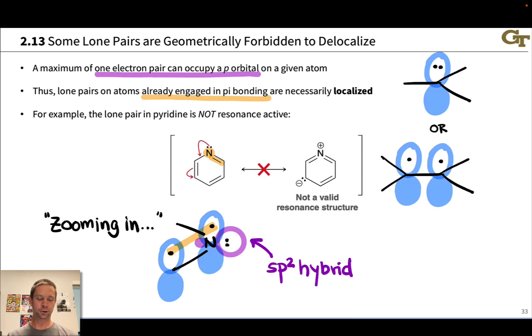And so this lone pair, which is in this purple orbital here and shown in the Lewis structure here, is localized rather than delocalized. And the general rule here is because only one electron pair can occupy a p orbital on a given atom, lone pairs on atoms that are already engaged in pi bonding or already have one lone pair that is engaged in resonance cannot have another lone pair involved in resonance. And so lone pairs on atoms already engaged in pi bonding are necessarily localized.